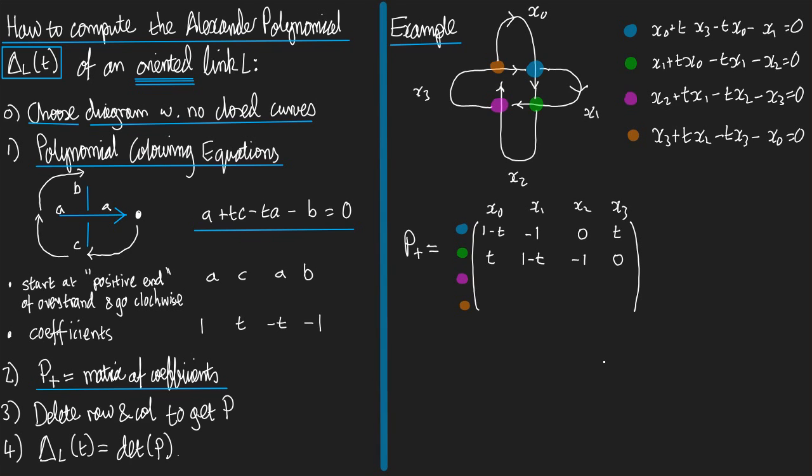Why don't you again pause and try and work this out yourself for the pink and orange rows. Here is my solution. Continuing in the pink equation, x2 appears with coefficient 1-t, x1 with coefficient t, x3 with coefficient -1, and x0 with coefficient 0. In orange, x3 has coefficient 1-t, x2 has coefficient t, x0 minus 1, and x1 not at all. So that was step number two.